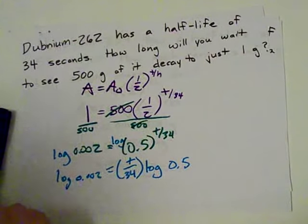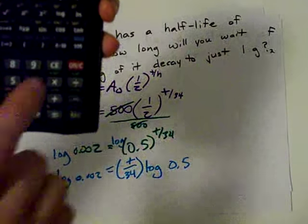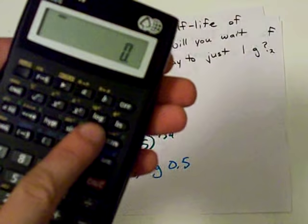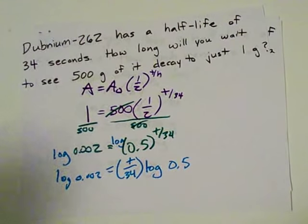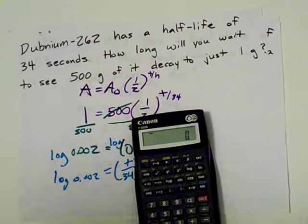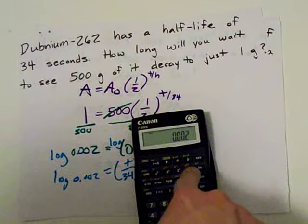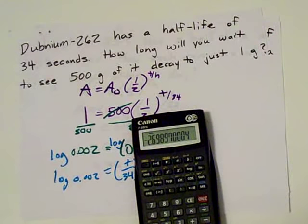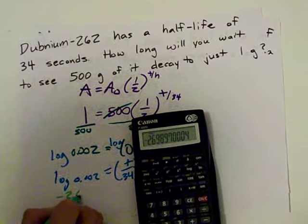Chemist Nate, what's the log? Well, luckily for you, most calculators have a log button. This one does, and I bought it at Canadian Tire for like 10 bucks. So, I'm sure yours does, too. What's the log of 0.002? 0.002 log. Negative 2.698.